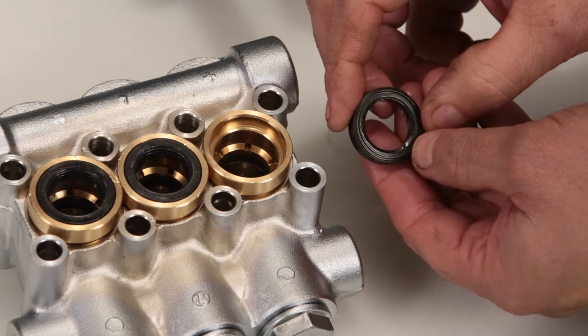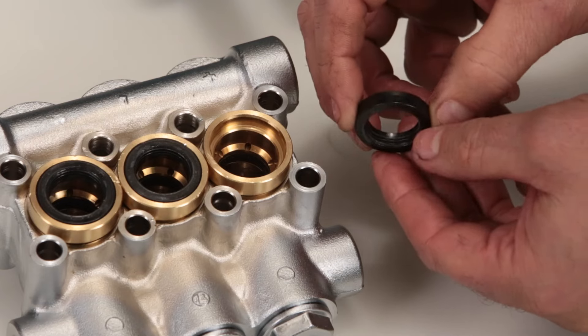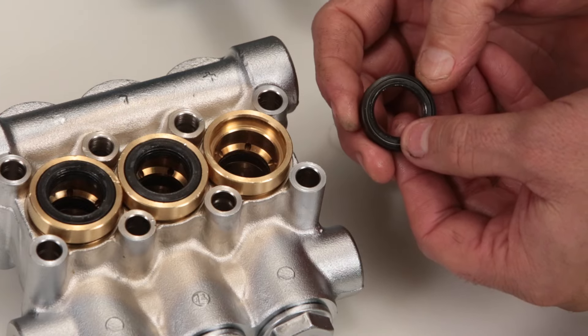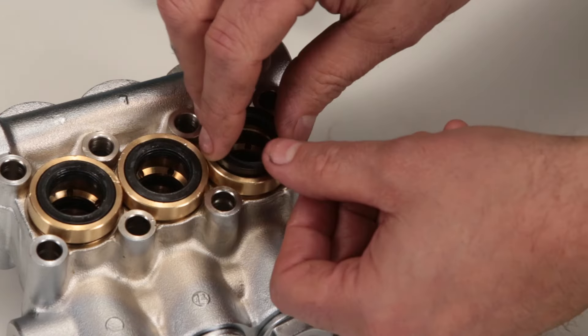Next, install the low pressure seal. The low pressure seal contains a spring on one side. Install with the spring side facing down and press into place.